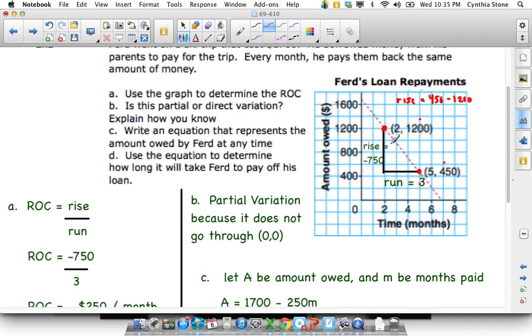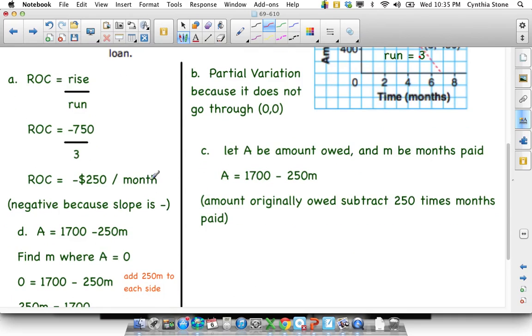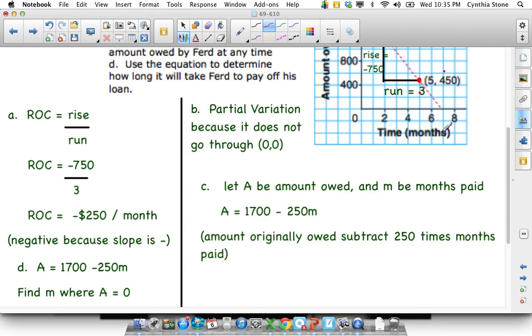And so the rate of change is always rise over run, at least as far as we're concerned. And so the rate of change, breaking it down per month, because that's what this is, is months, is 250 or negative 250 per month.